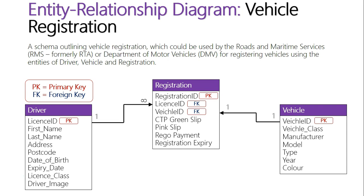Looking at the other side with vehicle ID, we have a one-to-one relationship. The reasoning is that each vehicle is only registered once, and each registration only refers to one vehicle. So that is a one-to-one relationship based on the records referencing each other.